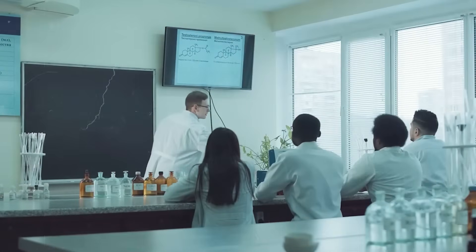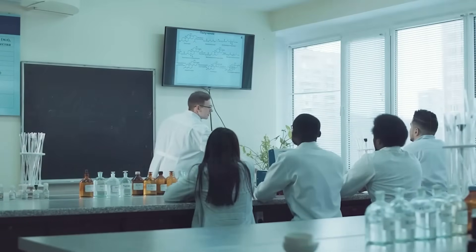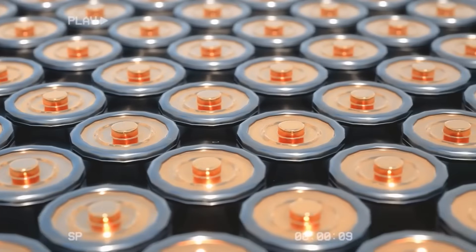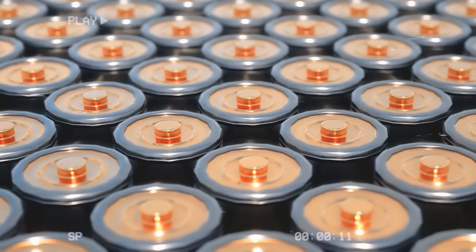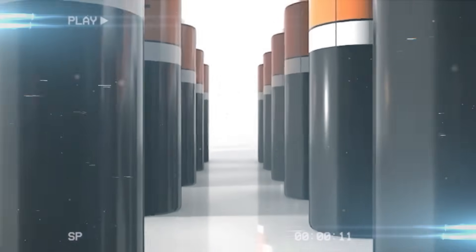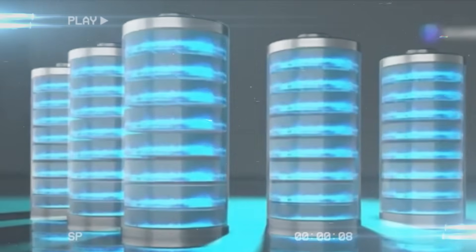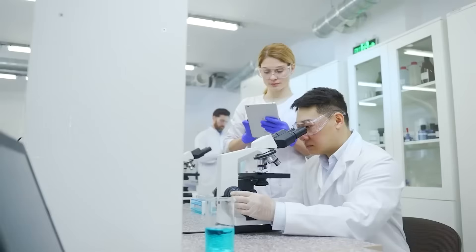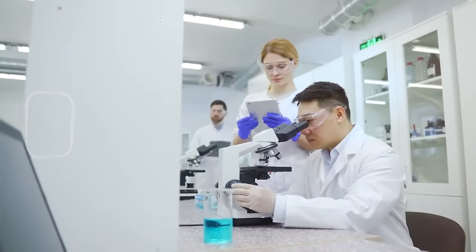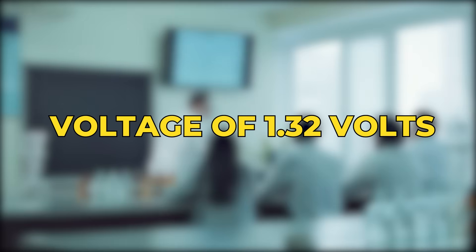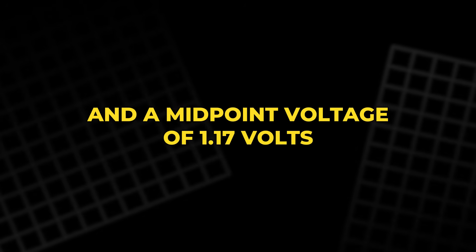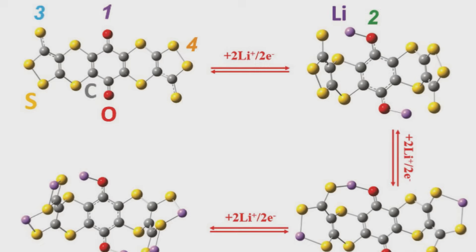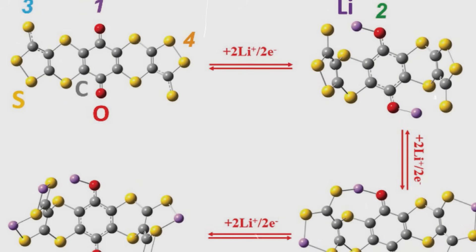The new structure also increases the number of electroactive sites, allowing for faster ion movement and better conductivity. The result is a stable, powerful, and extremely durable battery material. Electrochemical testing revealed that the battery operates with an initial discharge voltage of 1.32 volts and a midpoint voltage of 1.17 volts, both higher than those of typical organic cathodes.